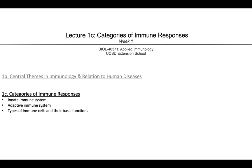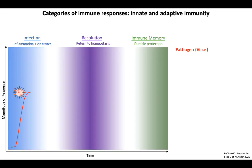This lecture is intended as a general introduction, so please keep in mind that we will be learning about these cells and signaling pathways much more extensively in future lectures. In order to compare and contrast certain aspects of innate versus adaptive immunity, I find it helpful to consider these systems as they relate to three phases of an immune response.